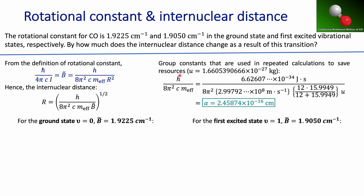Since we're going to be using the same values repeatedly, let's group all the constants together. I'm calling this grouped value alpha — it's just a collection of constants. By dimensional analysis — make sure to check your unit analysis — all these constants combine to give a value in centimeters.